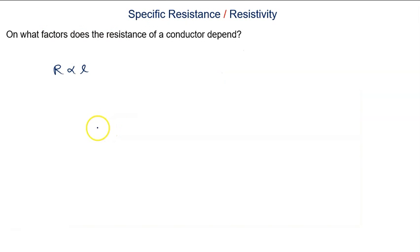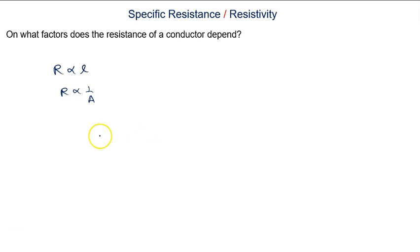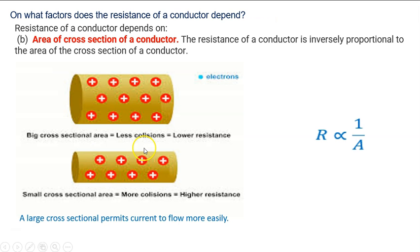Resistance also depends on the area of cross-section. Resistance is inversely proportional to area of cross-section. If area of cross-section will increase, resistance will decrease. A big cross-section area means less collision, and less collision means low resistance.